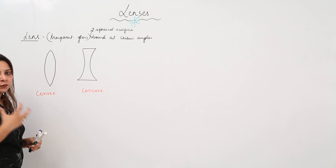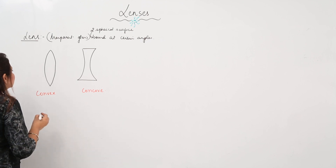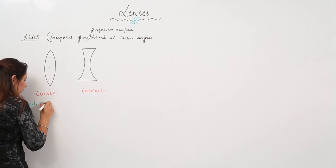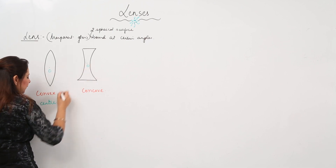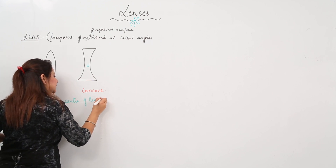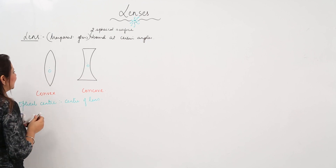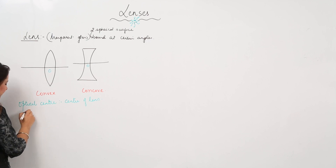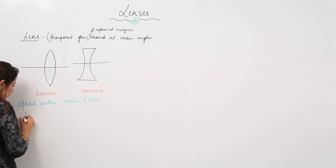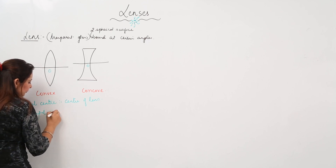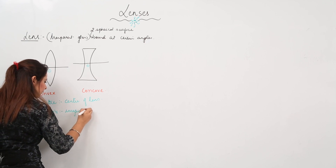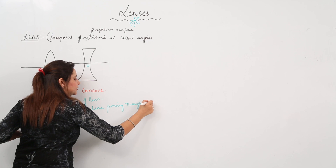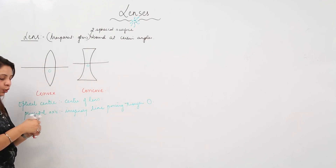We'll start with the terms involved in convex and concave lenses. The center of each lens is called the optical center. The imaginary line which passes straight through this optical center is called the principal axis — it is an imaginary line passing through O.